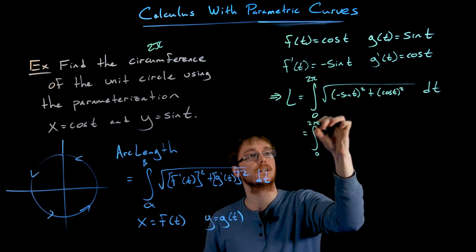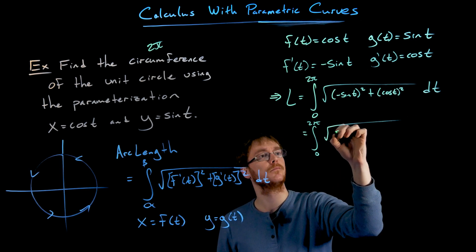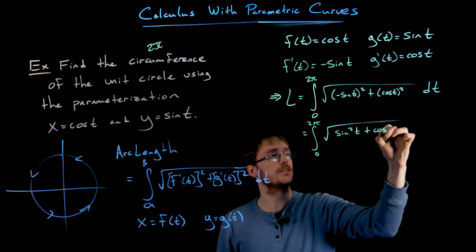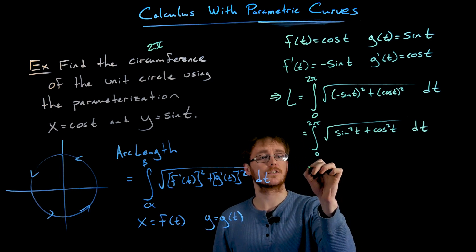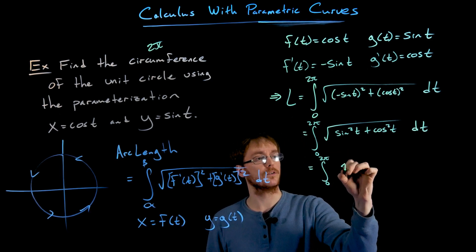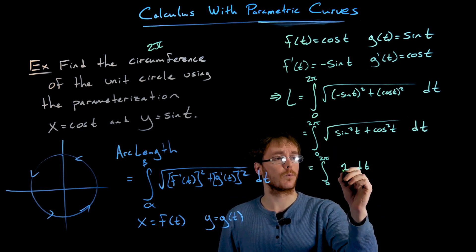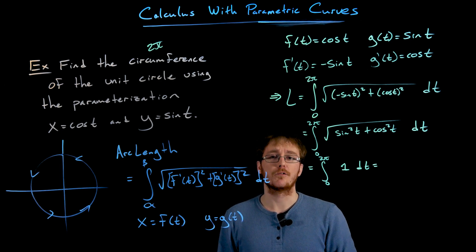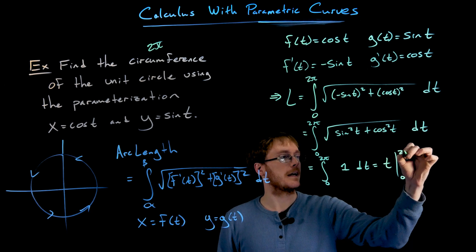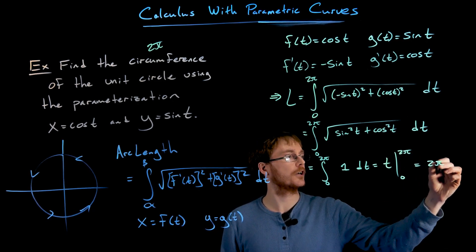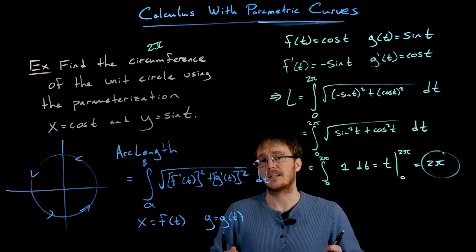This works out nicely. Squaring negative sine of T gives positive sine squared of T, and squaring cosine of T gives cosine squared of T. Under the square root we have sine squared plus cosine squared, which always equals 1. So the integrand simplifies to the square root of 1, which is 1. The antiderivative is just T; evaluating from 0 to 2π gives 2π minus 0, or 2π — verifying the circumference of the unit circle.